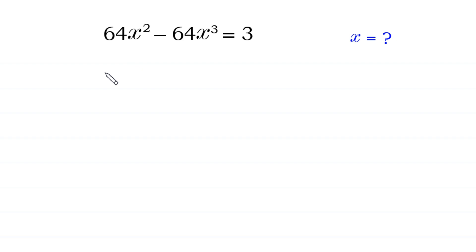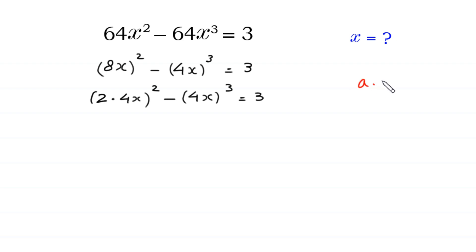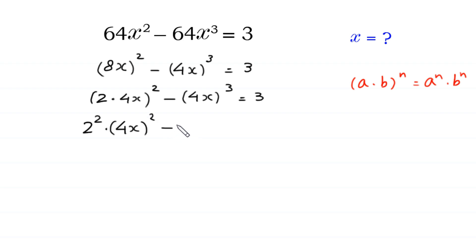We can write 64x² as (8x)² and 64x³ as (4x)³, so the equation becomes (8x)² minus (4x)³ equal to 3. We can write 8x as 2 times 4x, so this is 2 times 4x whole squared minus (4x)³ equals 3. According to the property of exponents, (a·b)ⁿ = aⁿ·bⁿ, this becomes 2² times (4x)² minus (4x)³ equals 3.